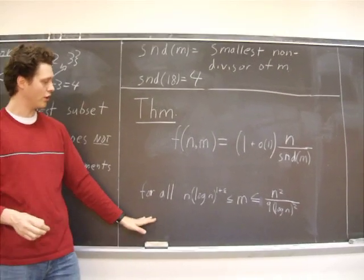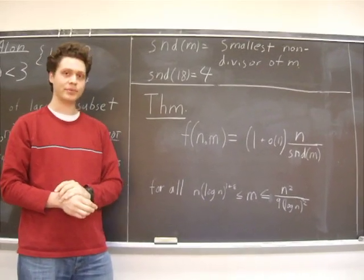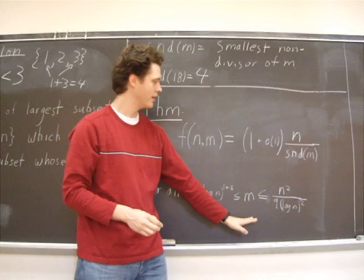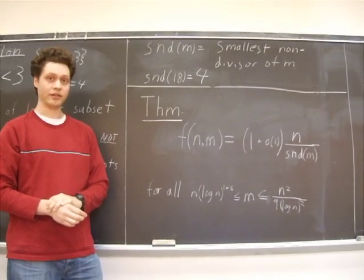And this theorem holds for all m in the following range. M has to be at least n times log n to the 1 plus epsilon, and m has to be at most n squared divided by 9 times log of n quantity squared.